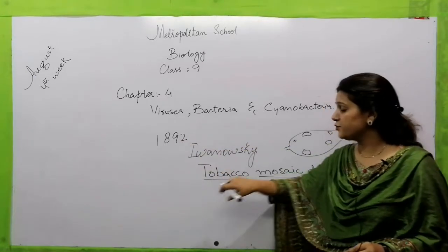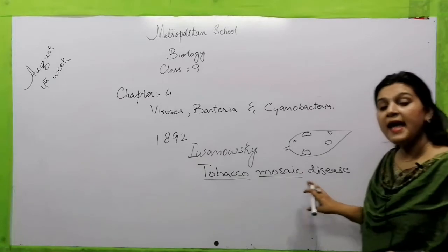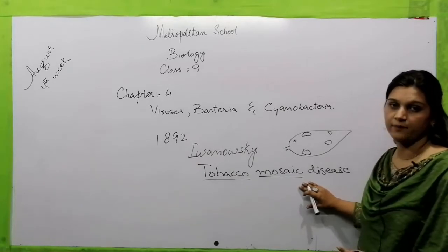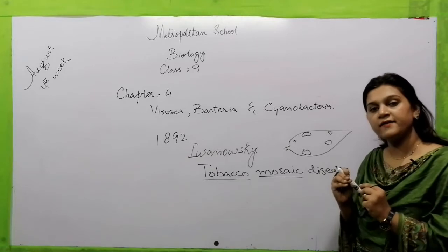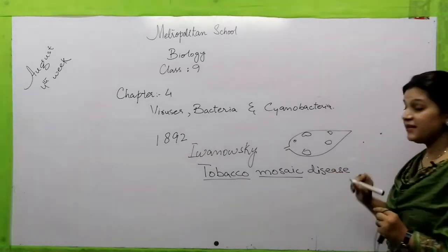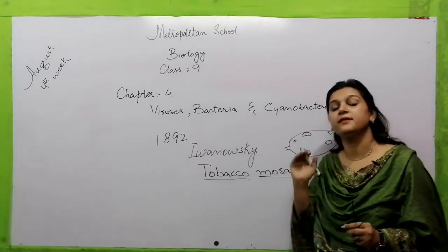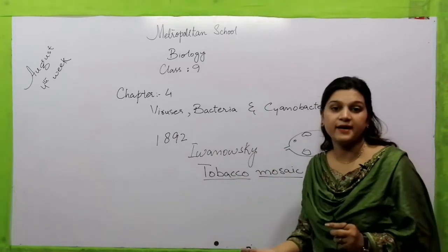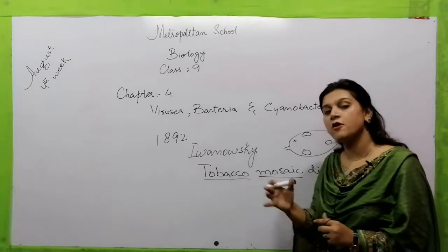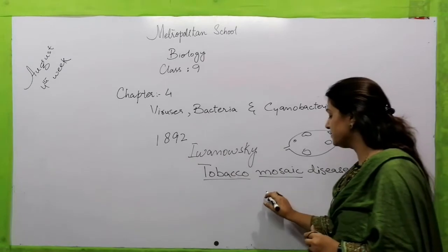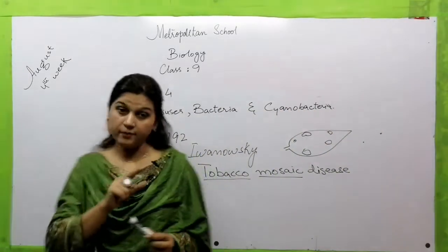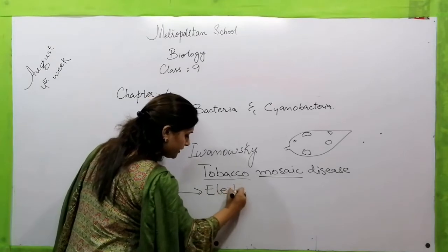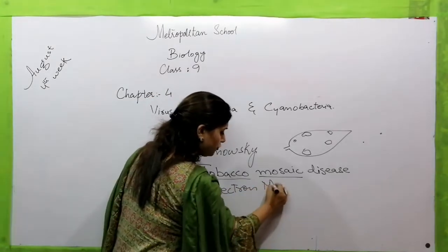He discovered that this disease is caused by something smaller than bacteria — particles even smaller than bacteria were responsible for this disease. At that time, they did not know these were viruses. Later on, that particle was named the tobacco mosaic virus. This happened in 1935, when the electron microscope was constructed.